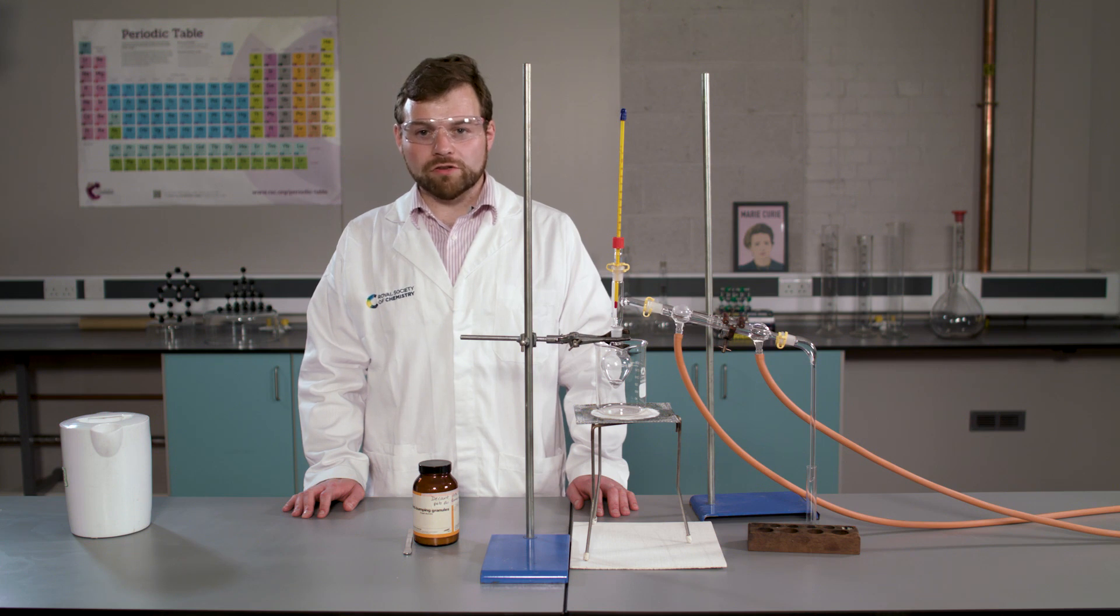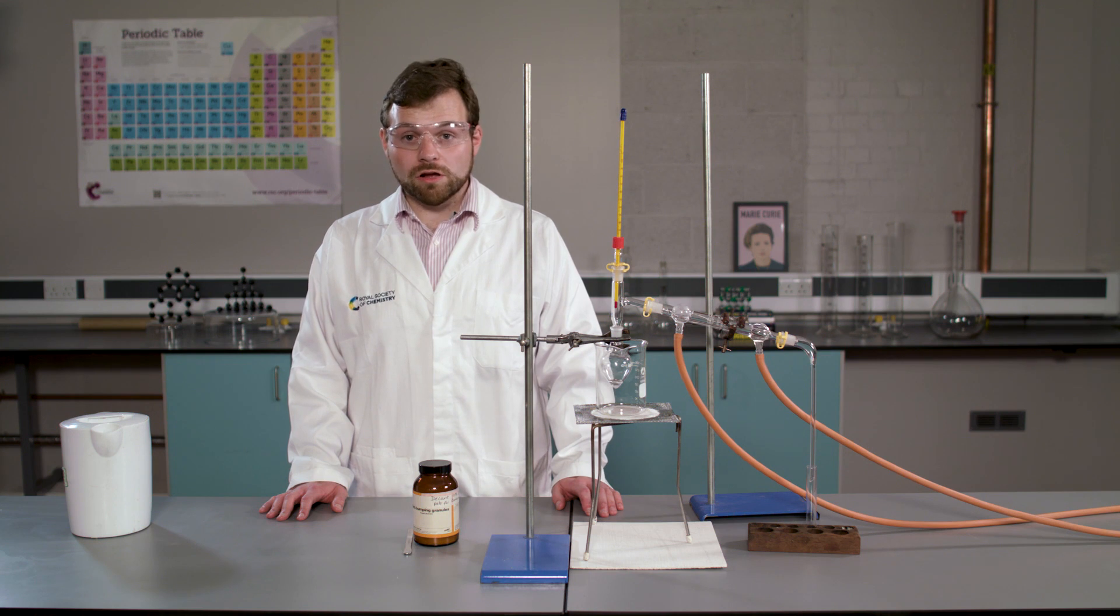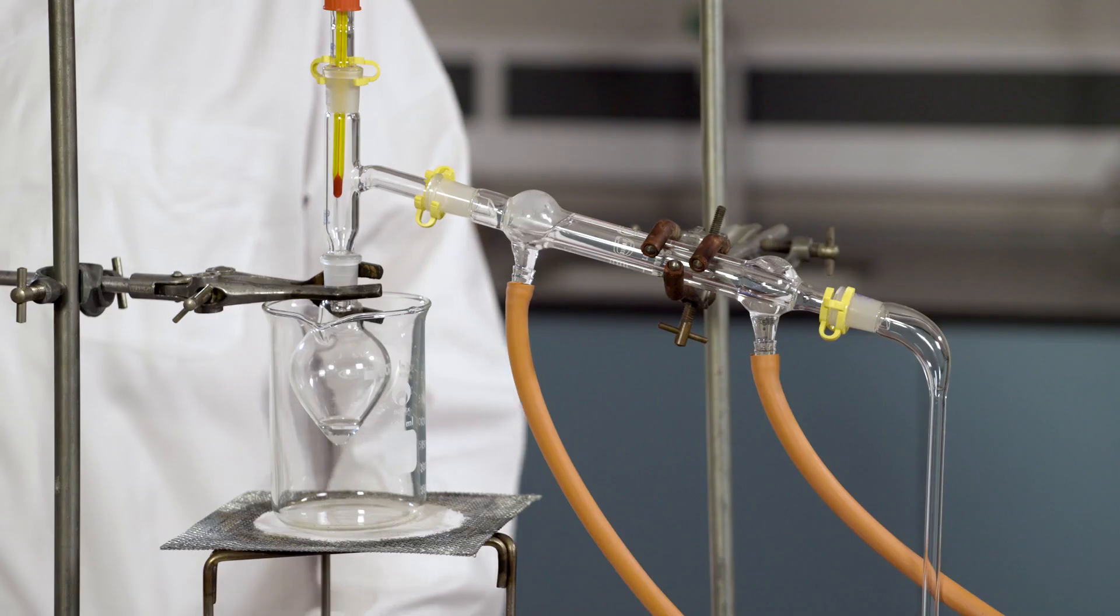The product in the correct temperature range is collected in a clean, dry test tube. Note, we must not allow the flask to boil dry. Now we are ready to start our distillation. Don't forget, our water inlet is at the bottom of the condenser.